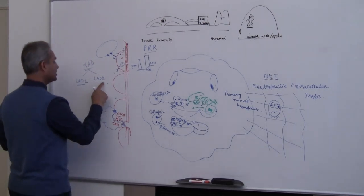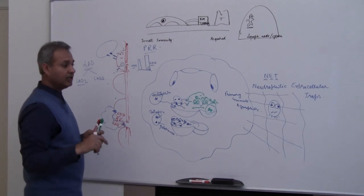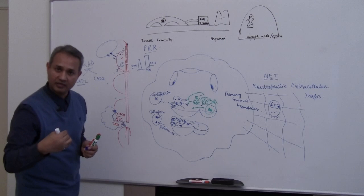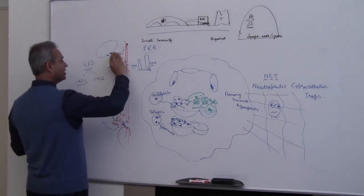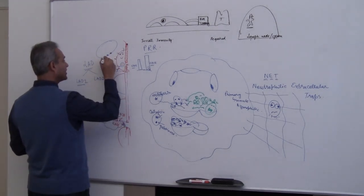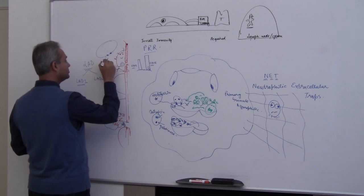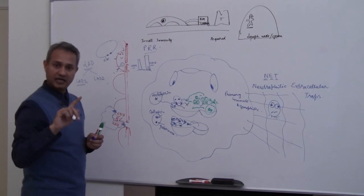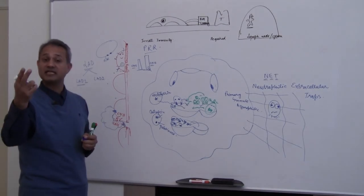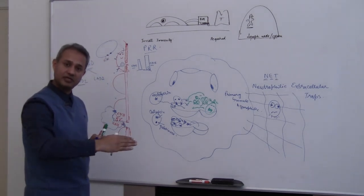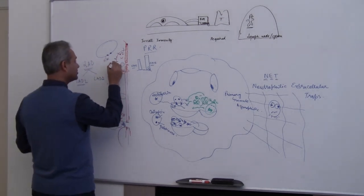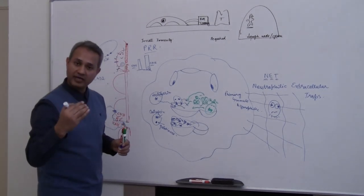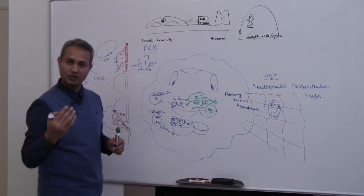Then we have leukocyte adhesion deficiency type 2. Type 2 is related to slowing down and rolling. Remember we talked about leukocytes carrying a candy with them - that was Siali Lewis X modified sugar. That was the selectin present on the surface of the leukocyte, and then there are selectins present on the surface of endothelium which engage together to cause the slowing down of the fighter jet, the neutrophil.